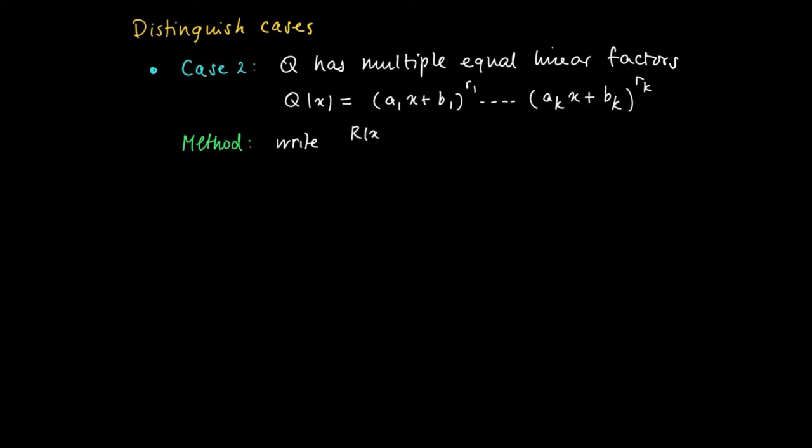So the general method here is that we try to write R(x) divided by Q(x). And we start off with a constant divided by a linear term, the first one.